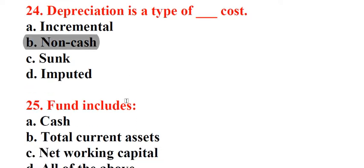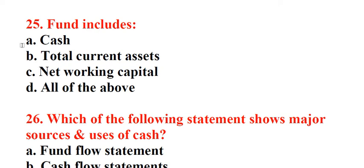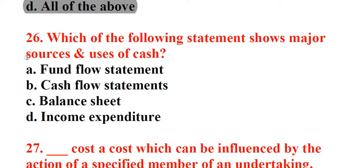Question 25: Fund includes. A. Cash, B. Total current assets, C. Working capital, D. All of the above. Answer: D. All of the above. Question 26: Which of the following statement shows major sources and uses of cash? A. Fund flow statement, B. Cash flow statements, C. Balance sheet, D. Income expenditure. Answer: B. Cash flow statements.